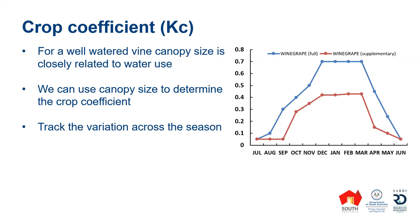Note that if you were in a region like Pathway and targeting a high yield with a large canopy, your system might be better described as a full irrigation system. There are options in the irrigation budgeting tool to allow you to select which system you want, and I'll go into that in a little bit more detail later in the talk.